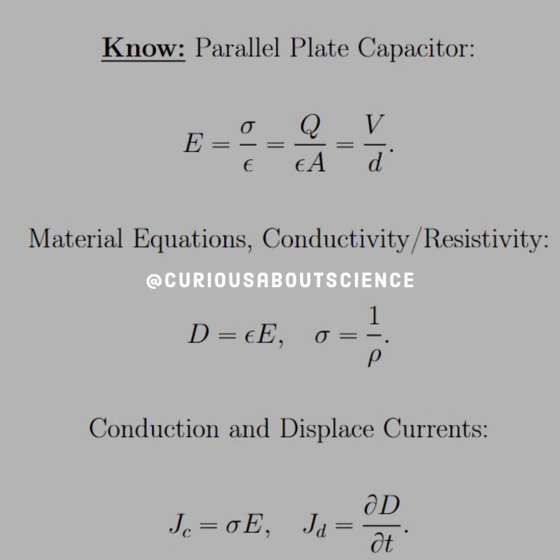So the material equations, i.e., the field in a material is equal to D equal epsilon times E, we saw that before in chapter 4, I think. Yeah, 3 or 4, I don't remember. No, it had to be 4.